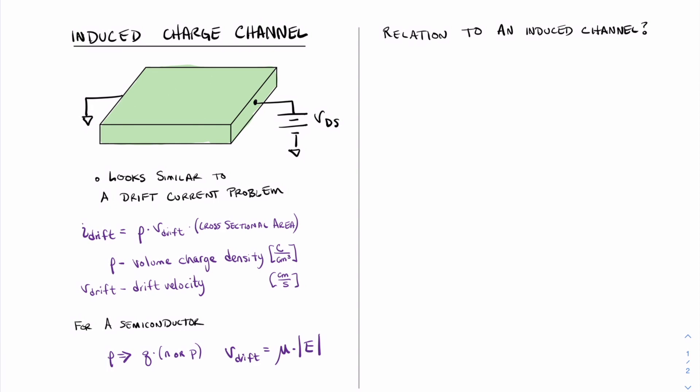And we know that drift current is the volume charge density times the drift velocity of the carriers times the cross-sectional area of the device. In this case, this is the cross-sectional area.